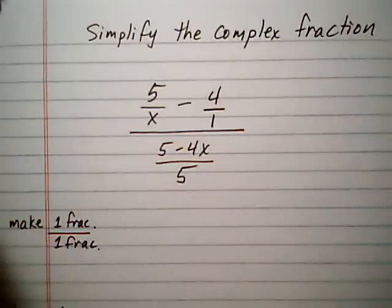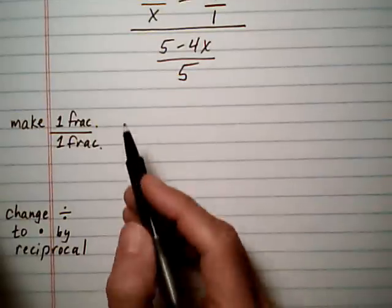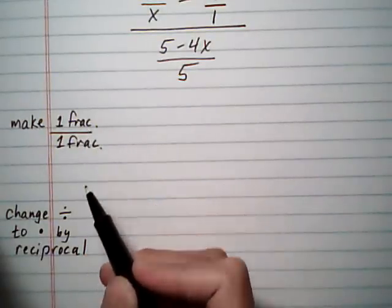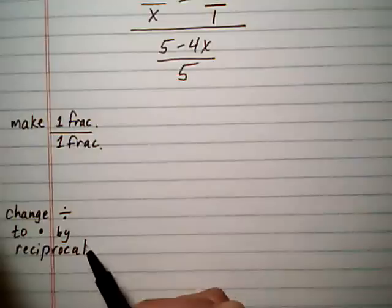But we're going to be using the same method as before, which is turn the problem into a single fraction over another single fraction, and then change divide to multiply by reciprocal.